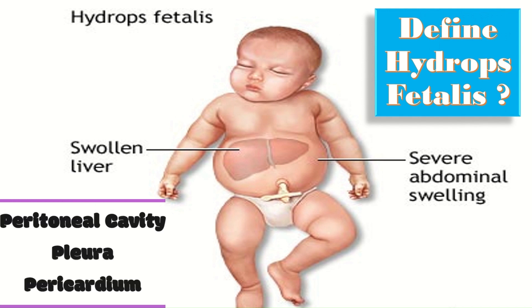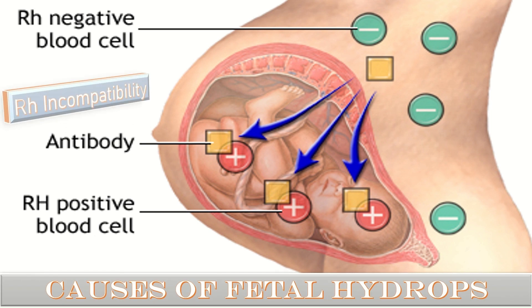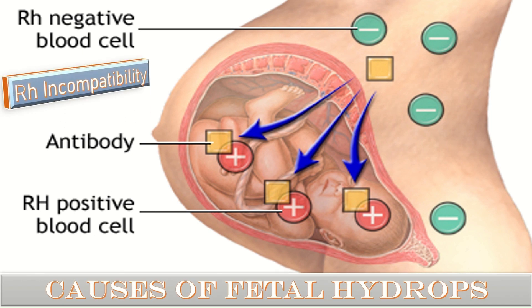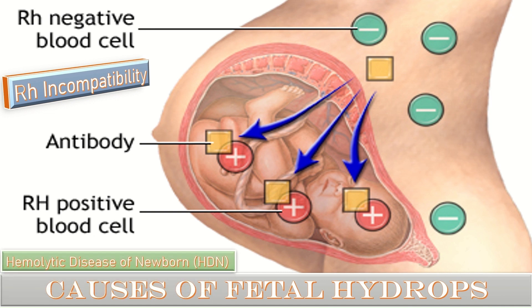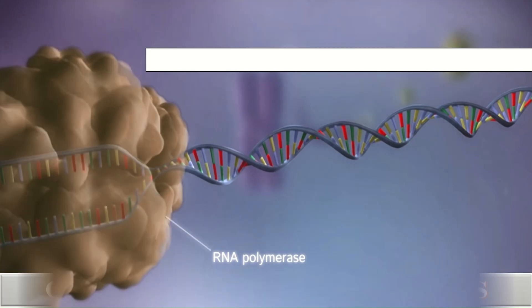What are the causes of fetal hydrops? Rh incompatibility causes a large number of red blood cells in the fetus to be destroyed. This condition is also called hemolytic disease of the newborn, and it results in compensatory high cardiac output, resulting in shifting of fluid from the intravascular compartment to the extravascular compartment, resulting in fetal hydrops.